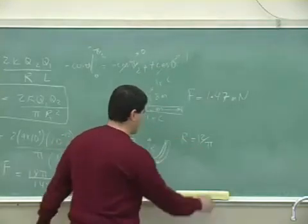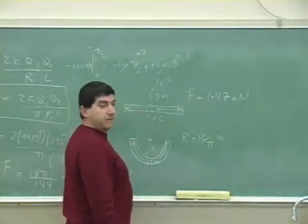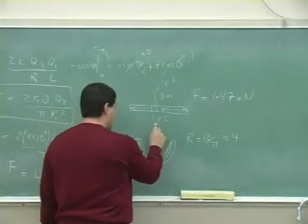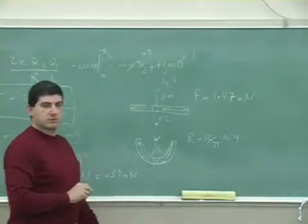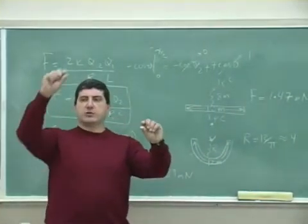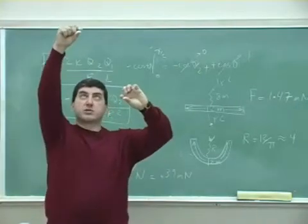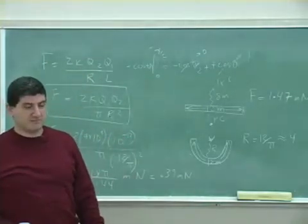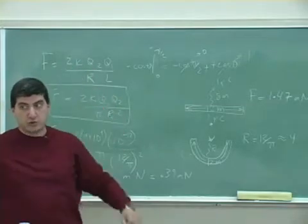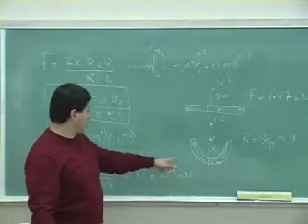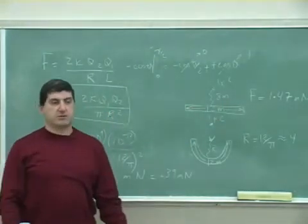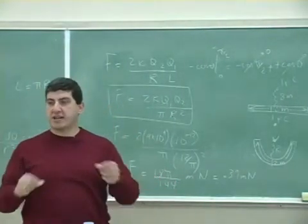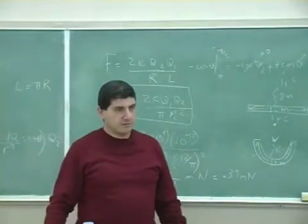In the flat rod case the charge was 8 meters away, but now with the bent rod the radius is only about 4 meters — so we've actually brought the charge closer. Yet by bringing it closer the force went down, from 1.47 to 0.39 millinewtons. So the question comes up: why? Why does the force go down even though we brought the charge closer when we bent the rod?